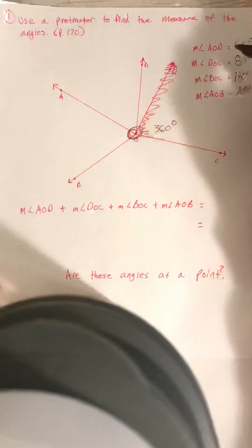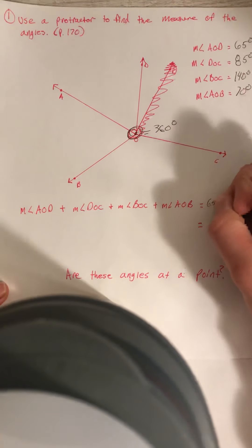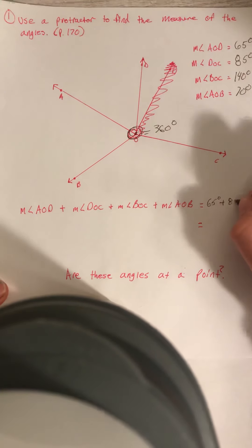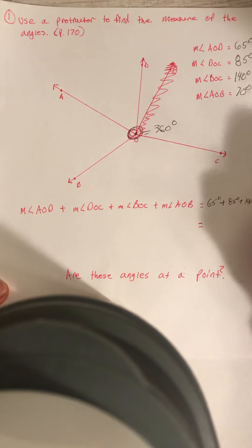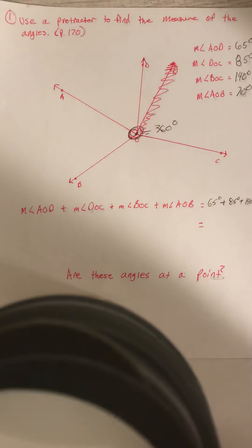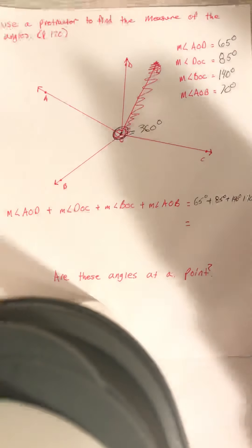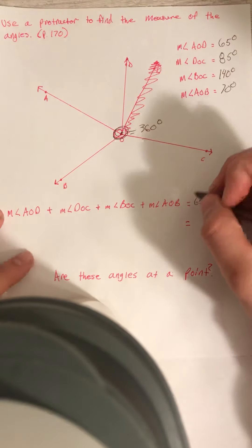So I'm going to add my measure of angle AOD, 65 degrees, plus the measure of angle DOC, 85 degrees, plus the measure of angle BOC, 140 degrees, plus the measure of AOB, 70 degrees. If I add all of those up, 65 plus 85 plus 140 plus 70, it's going to equal 360 degrees.